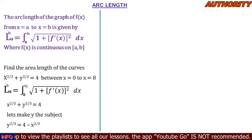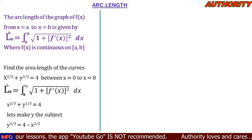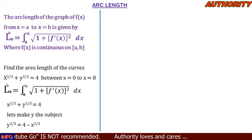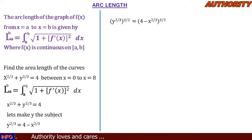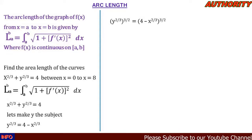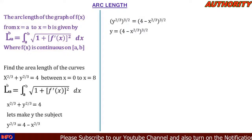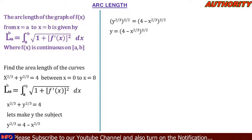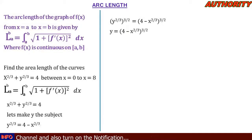To remove the exponent 2/3 from y, we multiply both sides by the inverse exponent 3/2. On the left-hand side, (2/3) × (3/2) = 1, giving us y. On the right-hand side we have (4 - x^(2/3))^(3/2). So the function is y = (4 - x^(2/3))^(3/2).